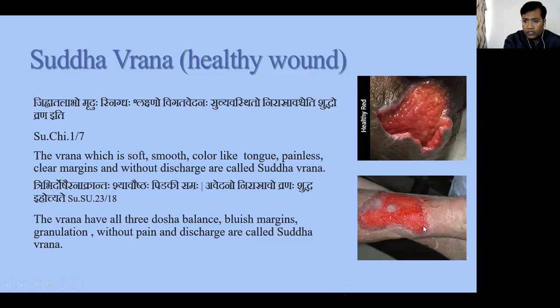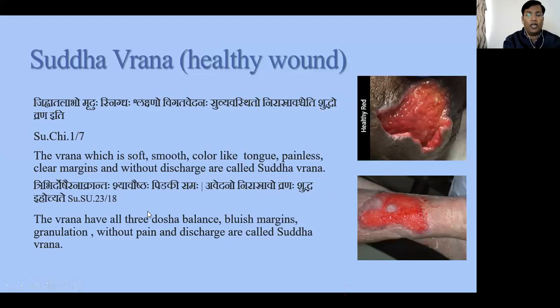You can see in the picture the wound has a little bluish coloration, and there is some granulation tissue — small Pidikas, just like the papillae on our tongue. This is the granulation tissue. The wound texture is just like the tongue, the doshas are in Samyavastha, the margins are Syaavush (bluish), Pidikasama (equal granulation all over), Avedanu (no pain), Nirasarava (no discharge) — these are features that identify a healthy wound from an unhealthy wound.